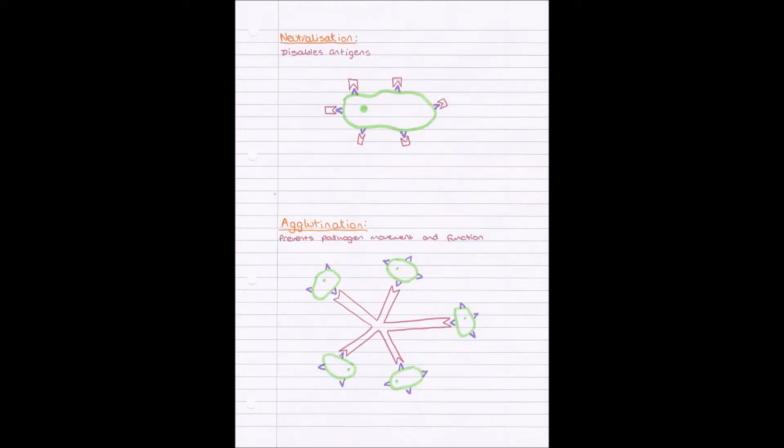So far we have antigens, molecules which sit on the plasma membrane with a specific shape that provoke an immune response. And then we have an antibody with a constant region that stays the same with all antibodies, and a variable region which has a specific shape complementary to, so reverse to, the specific antigen it is working with.